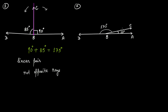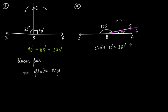Are angles 10 degrees and 170 degrees adjacent? Yes — there is a common vertex, a common arm, and the two non-common arms BD and BA are on either side of this common arm. That makes these two angles adjacent, and 170 degrees plus 10 degrees equals 180 degrees. So yes, these two adjacent angles of 10 degrees and 170 degrees are a linear pair.